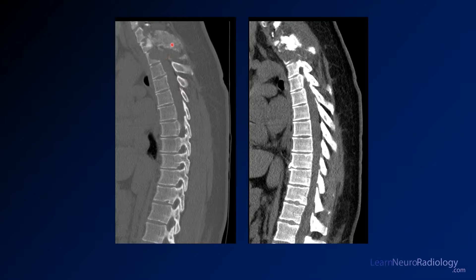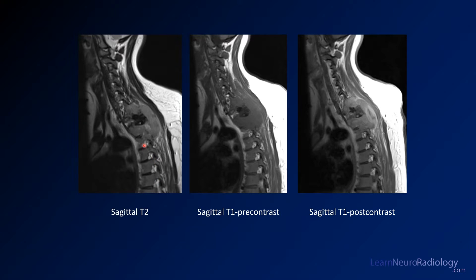On the sagittal images you see the same features as on the axials: matrix formation centrally with that dense ground glass bone, and on the soft tissue window very dense areas with surrounding areas of destruction. On the MR, this image is slightly off to the left of midline. The area that is dark on all sequences is the bony matrix formation, whereas surrounding areas are hyperintense on T2. It's a very destructive, very solid mass, and on post-contrast imaging there is pretty solid enhancement.